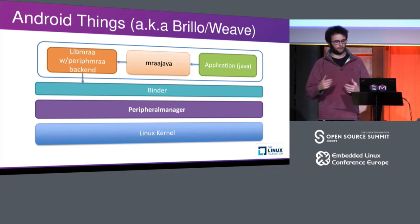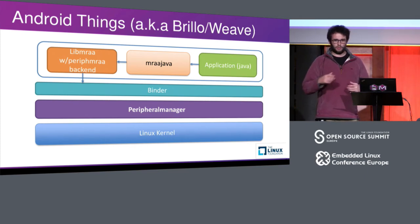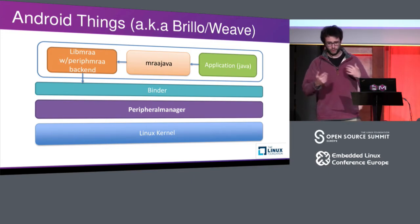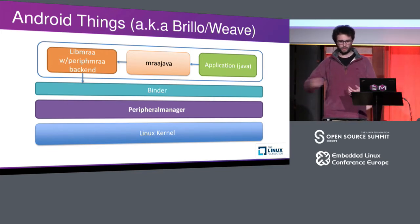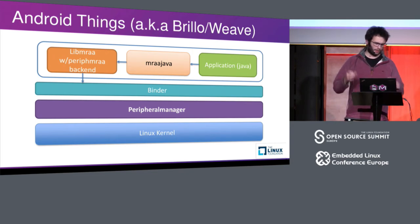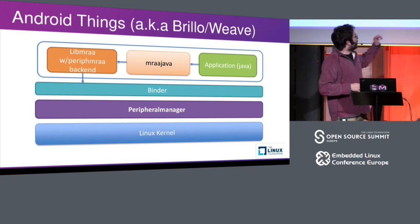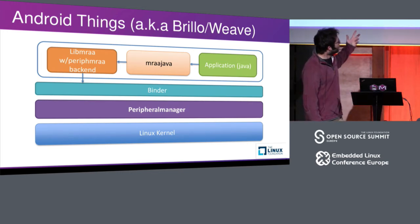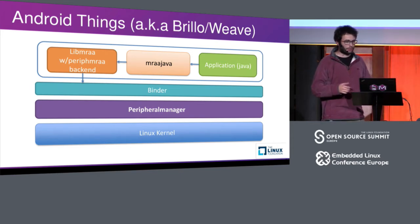Some backends are unique - like the Peripheral Manager one or the AFB one. Others are treated as sub-platforms, so you can have two backends running in MRAA at the same time. When you run a Firmata board, it's considered an add-on board - you can do IO directly on your SBC and also on the Firmata board by adding an offset to IO numbers. Asking for bus 512 gives you the USB-controlled Firmata board rather than your native board. The application's Java code calls MRAA Java, which calls libMRAA with the peripheral backend, which calls the Android binder, and the Peripheral Manager does the operation on the kernel directly.